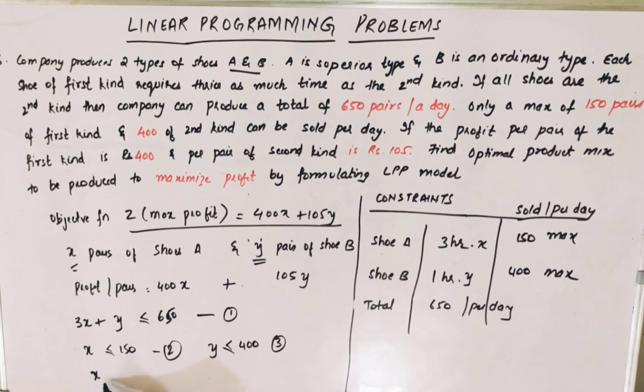The last constraint is X should be greater than or equal to 0, Y should be greater than or equal to 0. Obviously, we cannot have negative number of shoes being manufactured.